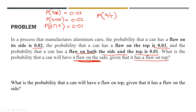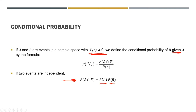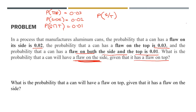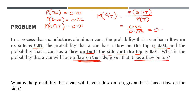From the previous slide, the formula is the intersection probability of A and B divided by P(A). So we can equate this as the probability of side∩top all over the probability that it has a flaw on top. Since we already have the values, we substitute directly: 0.01 divided by 0.03, which is equivalent to 0.33. So this is our probability that it has a flaw on the side given that it has a flaw on top.